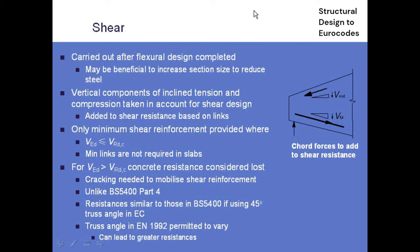Another difference is that if we don't exceed the shear resistance of the concrete, then we don't need to put links in other than minimum links for a beam - but for a slab we don't need links at all. As soon as we exceed VRDC, the concrete strength, and we start adding links in, we can no longer add the two components together; we have to design entirely on links. But that isn't as desperate as it sounds because we're allowed to vary the truss angle, which means you generally get much higher resistances out of the Eurocodes than from BS5400.